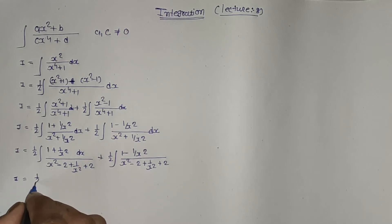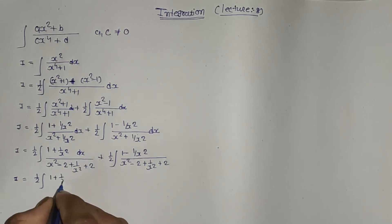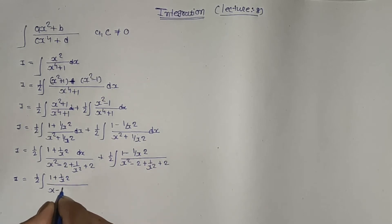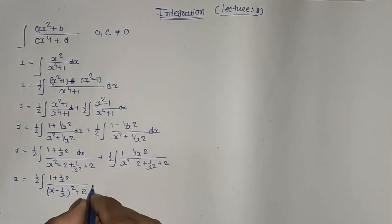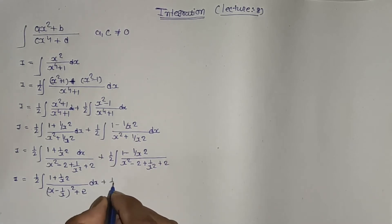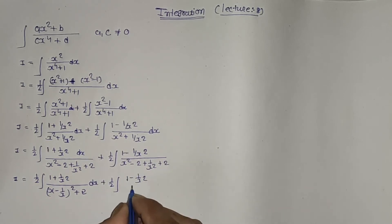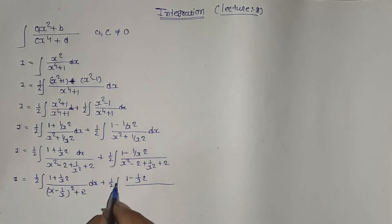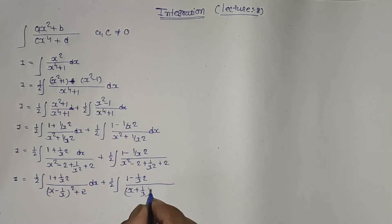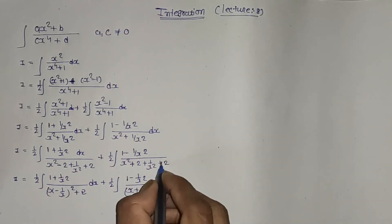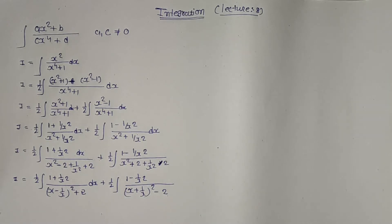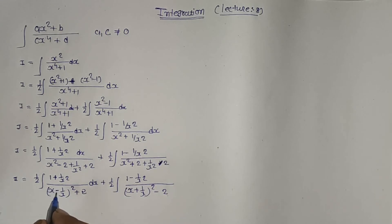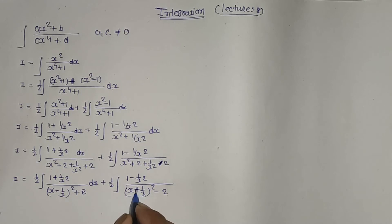So I equals one-half integration of (1 + 1/x²) divided by (x - 1/x)² + 2 dx, plus one-half integration of (1 - 1/x²) divided by (x + 1/x)² - 2 dx. Remember: if the numerator has plus, the denominator perfect square term has minus, and vice versa.